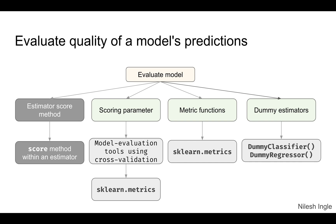Here is the overall theme of the videos for evaluating the model. On the left-hand side we have the estimator score methods — the built-in methods within the estimator — but we won't be discussing those. What we will discuss are three items on the right-hand side: the scoring parameter, which uses the scikit-learn metrics library; the metrics functions from the metrics library; and the dummy estimators — one for classifiers and one for regressors.